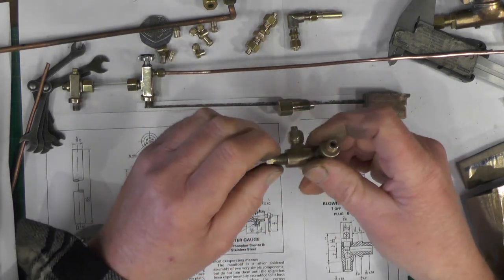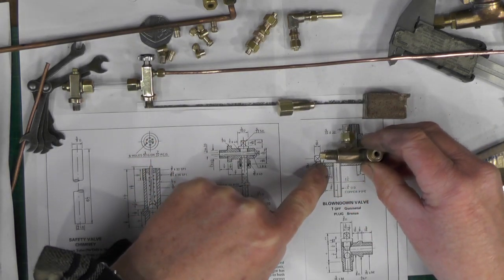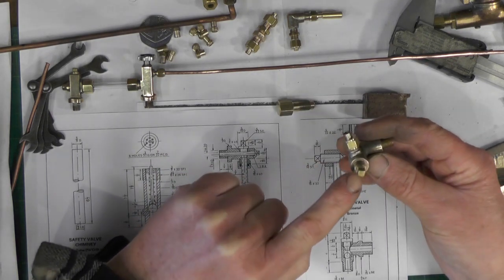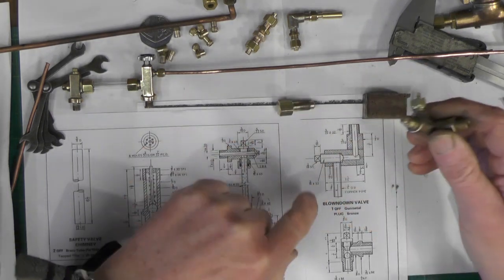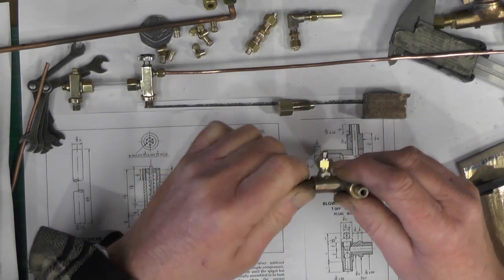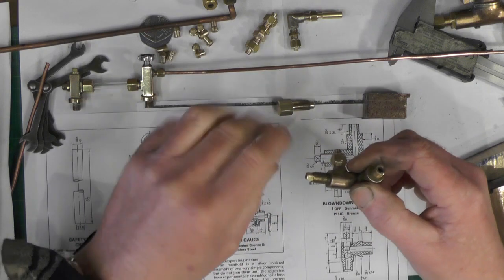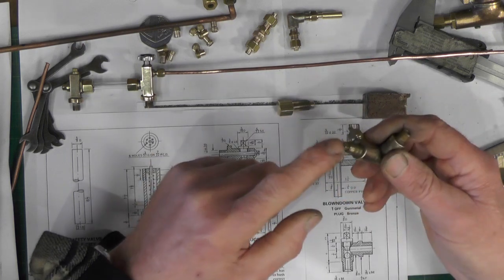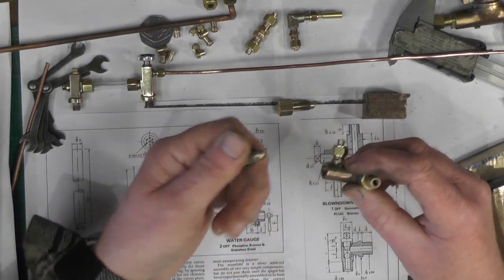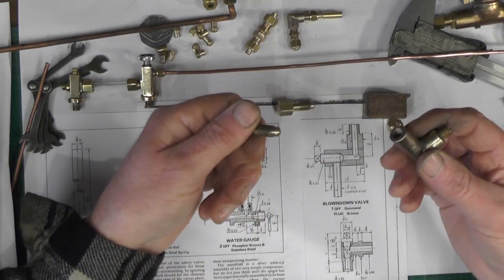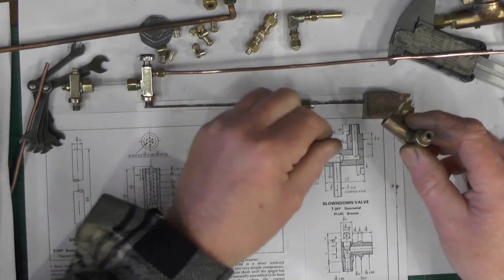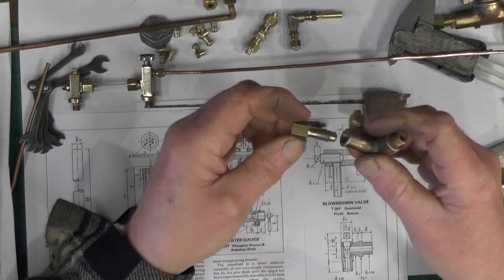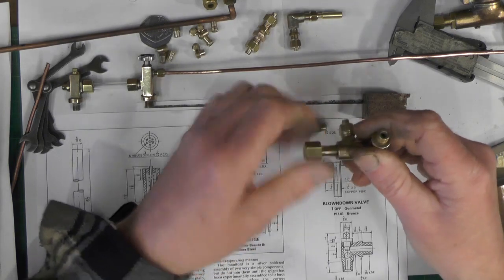And then the other modification I've done, instead of this screw to shut the valve off with a square on the end, I wasn't really happy with that 3/16 square, especially on brass. Because when you're constantly tightening it and undoing it to blow down, I think that might not be suitable. So I've made one with a hexagon head to put a proper spanner on.